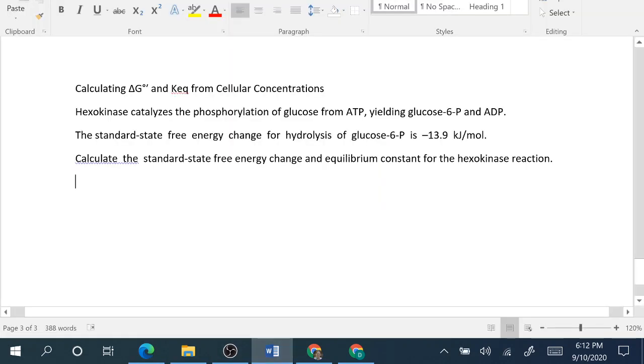For our next problem, number 11, we'll calculate delta G naught prime and Keq from cellular concentrations. Hexokinase is an enzyme that catalyzes the phosphorylation of glucose from ATP, yielding glucose 6-phosphate and ADP. The standard state free energy change for the hydrolysis of glucose 6-phosphate is negative 13.9 kilojoules per mole.